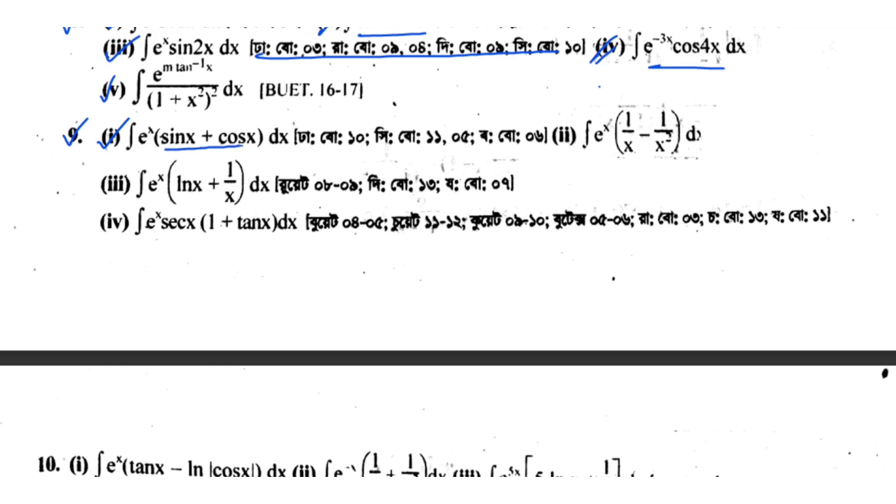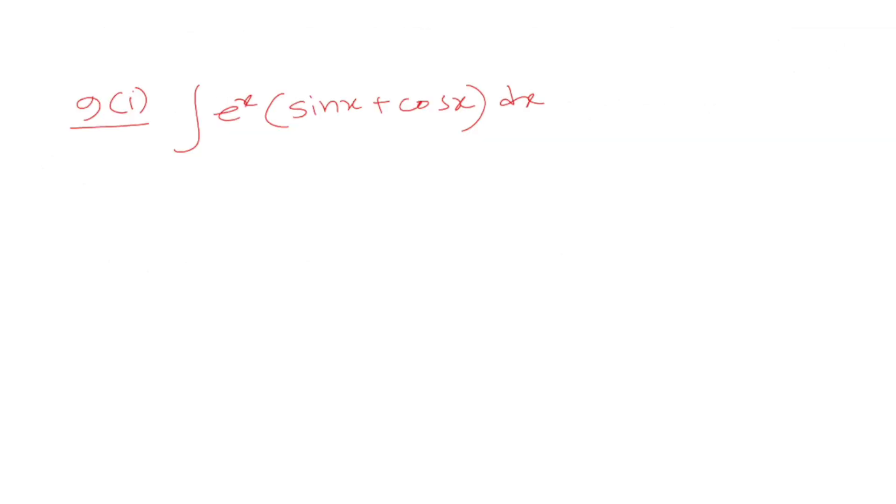Let me show you an example. This is problem number 2(i). The integration of e^x times (sinx + cosx)dx. We have e^x times sinx plus cosx, all dx. Now I'll show you clearly - sinx is there, and the derivative of sinx is cosx. In cross position you need to recognize that cosx derivative is negative sinx.